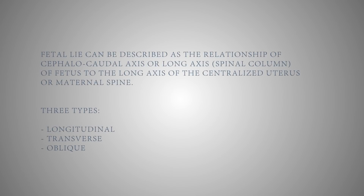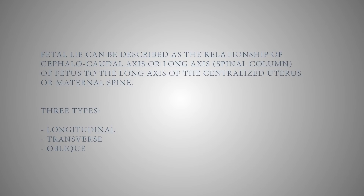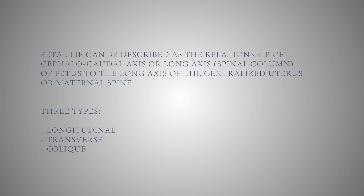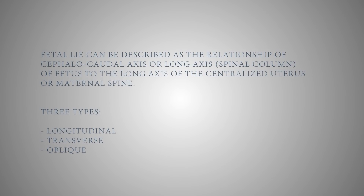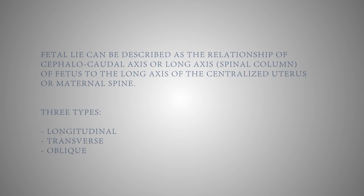Fetal Lie can be described as the relationship of the cephalocaudal axis, or long axis, or spinal column of the fetus to the long axis of the centralized uterus or maternal spine. Fetal lie can be of three types: longitudinal, transverse, and oblique.